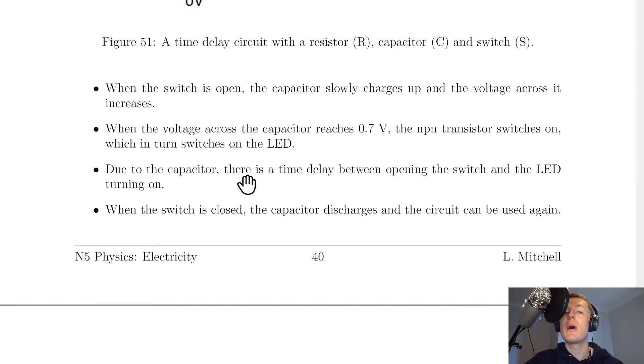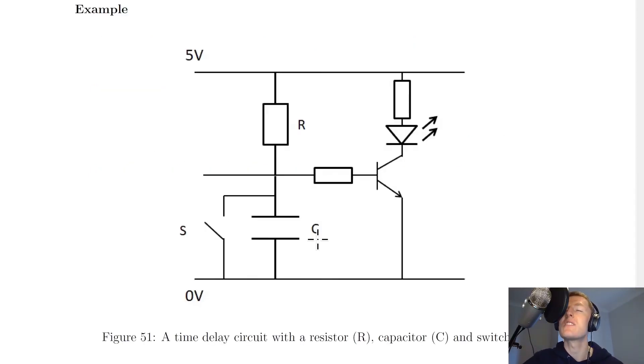And then it says, due to the capacitor, there is a time delay between opening the switch and the LED turning on. So because it will take time for the voltage across the capacitor to increase as the voltage builds up, the voltage across the transistor won't turn on until it's high enough, and then our LED will turn on after some time delay.